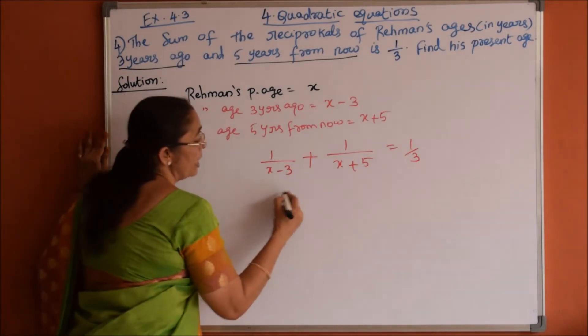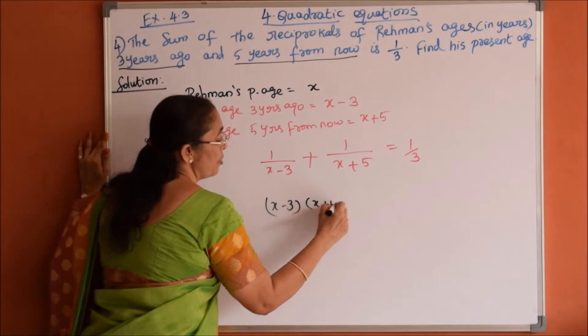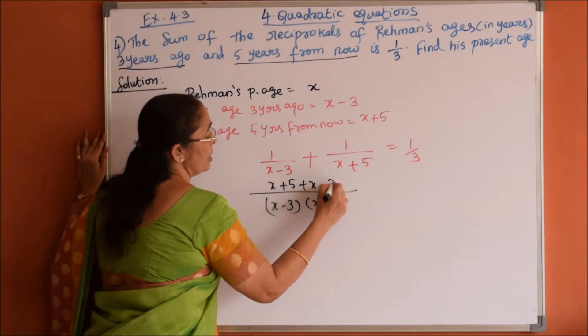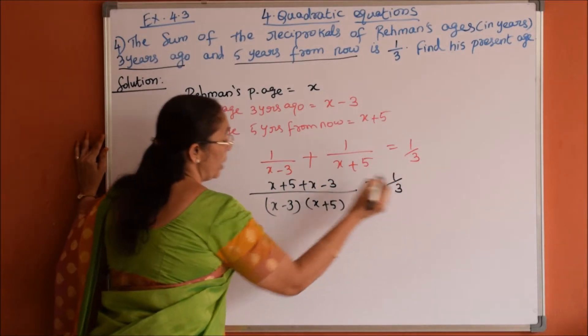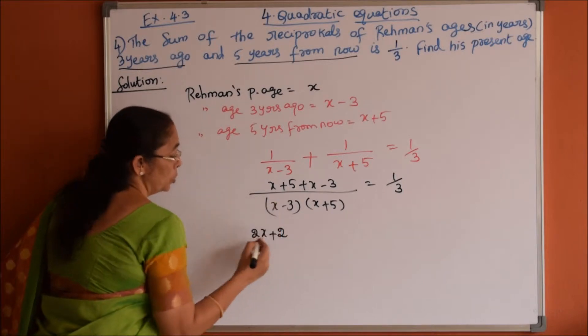So LCM x plus 5 into x minus 3, numerator is x plus 5 plus x minus 3 is equal to 1 by 3. So numerator 2x plus 2 divided by...